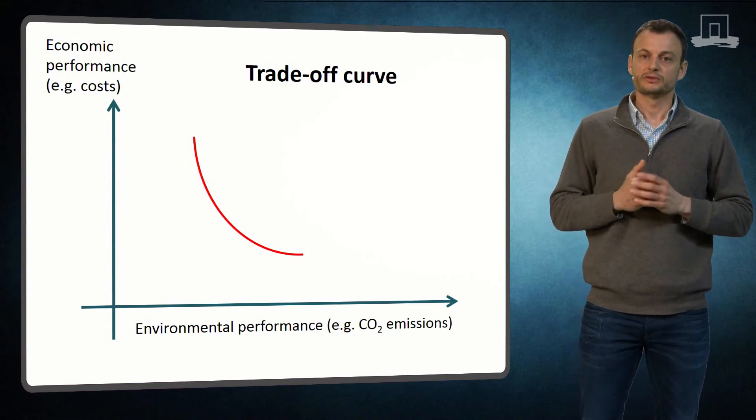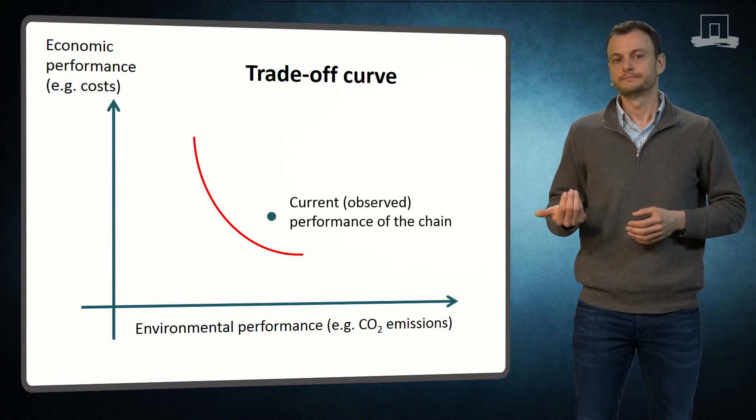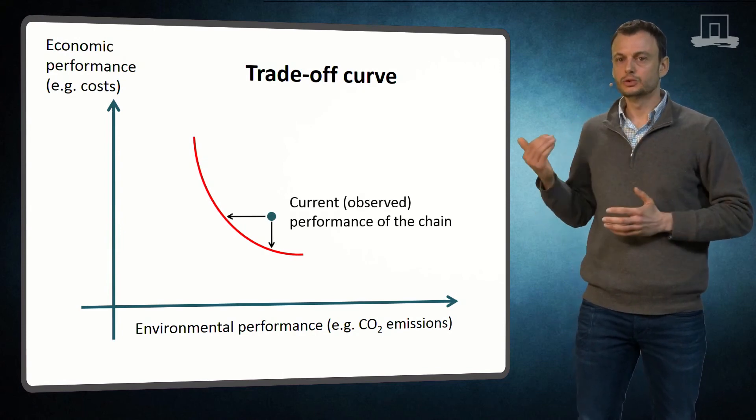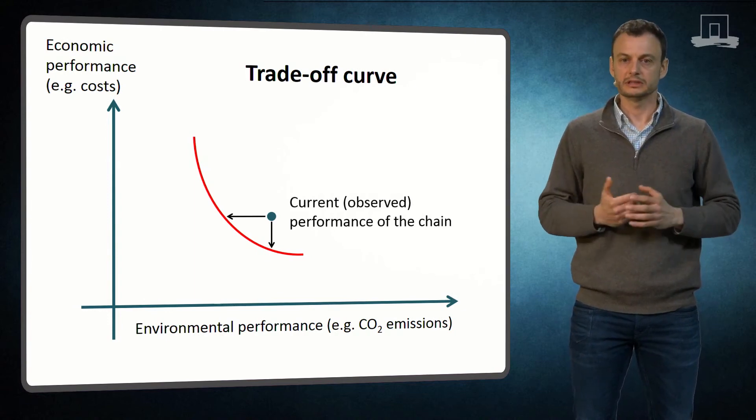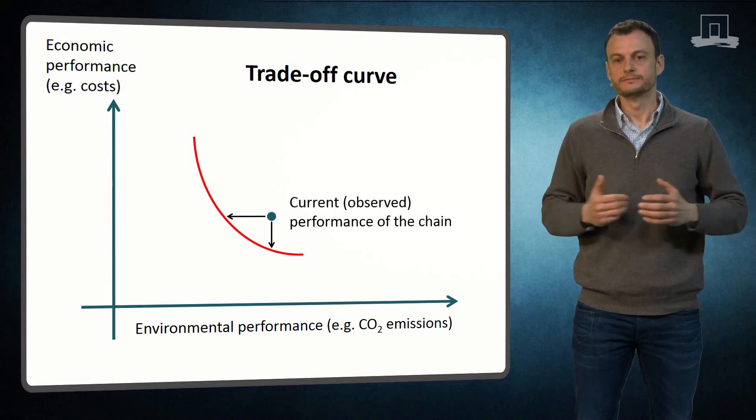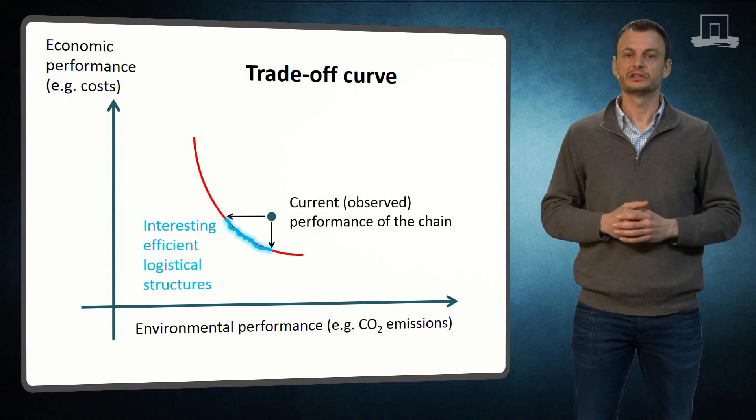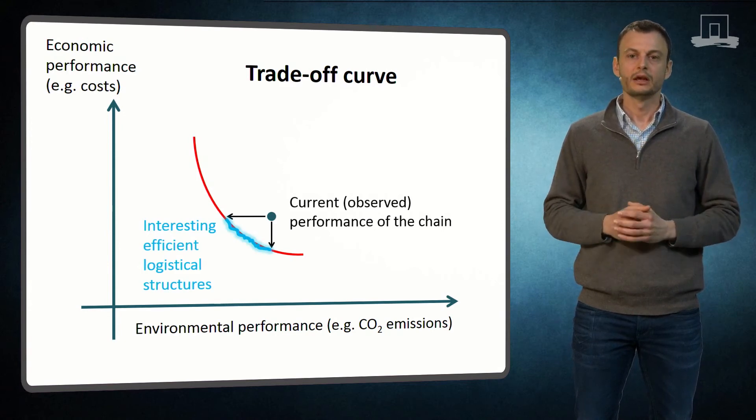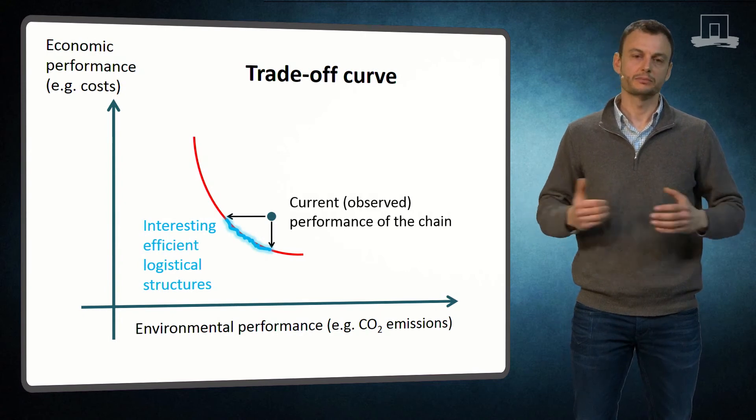If the current performance of the chain is not on this curve, it means that there is room for improvement. For example, CO2 emissions can be reduced without compromising the economic performance. Or the other way around, costs can be reduced without increasing pollution. Apart from these two options, there might be a lot of other interesting efficient solutions in between. Obviously, all of these options improve the current performance of the supply chain.